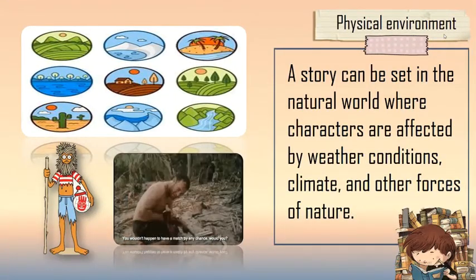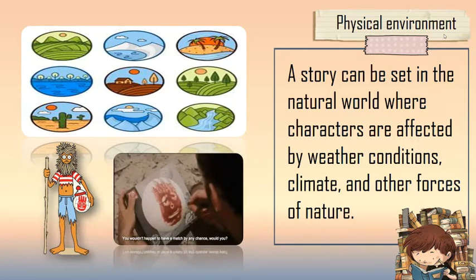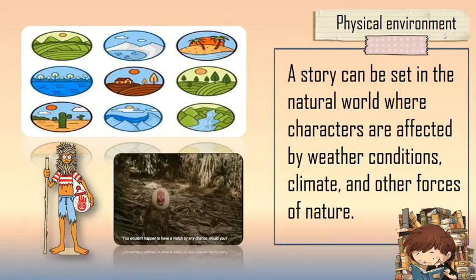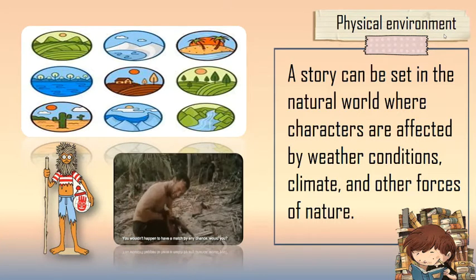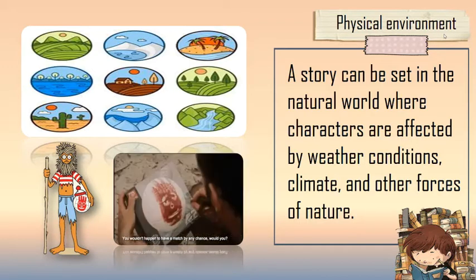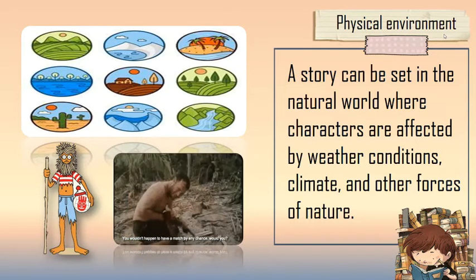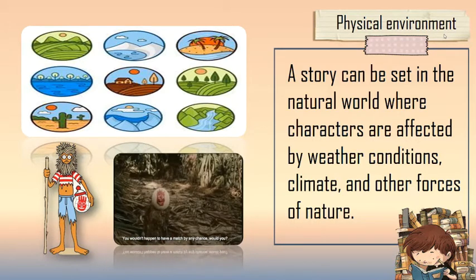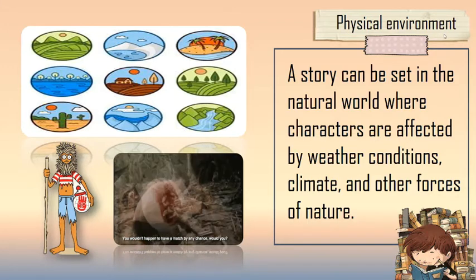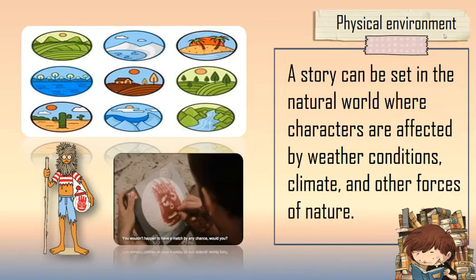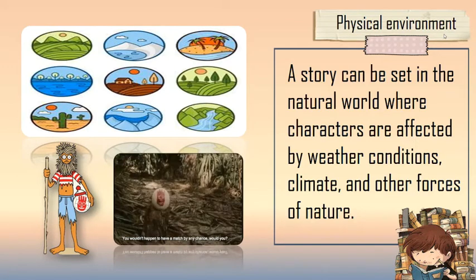Third is the physical environment. A story can be set in the natural world where characters are affected by weather conditions, climates, and other forces of nature. An easy example is narratives or films set in a jungle or desert. Examples for deserts include narratives about cowboys, and also the film titled Cast Away.